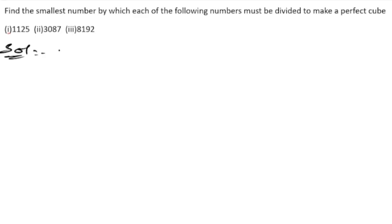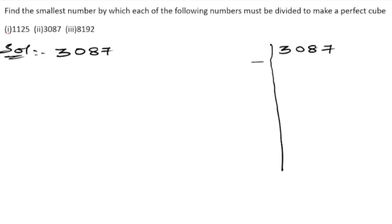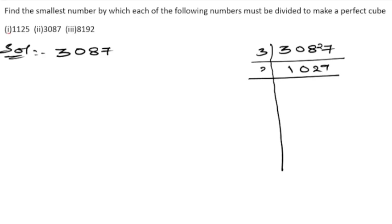Now let us solve the second part: 3087. Since the last digit is 7, it is not divisible by 2. Adding the digits: 3 + 0 + 8 + 7 = 18, which is divisible by 3. Dividing by 3: 3 × 10 = 30, 3 × 2 = 6, 3 × 9 = 27. Then dividing by 3 again.